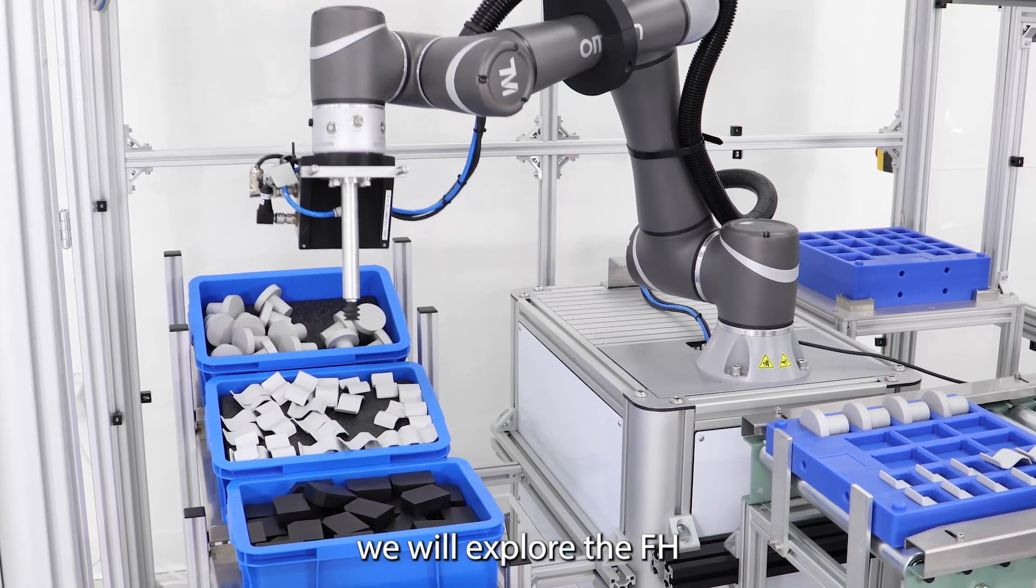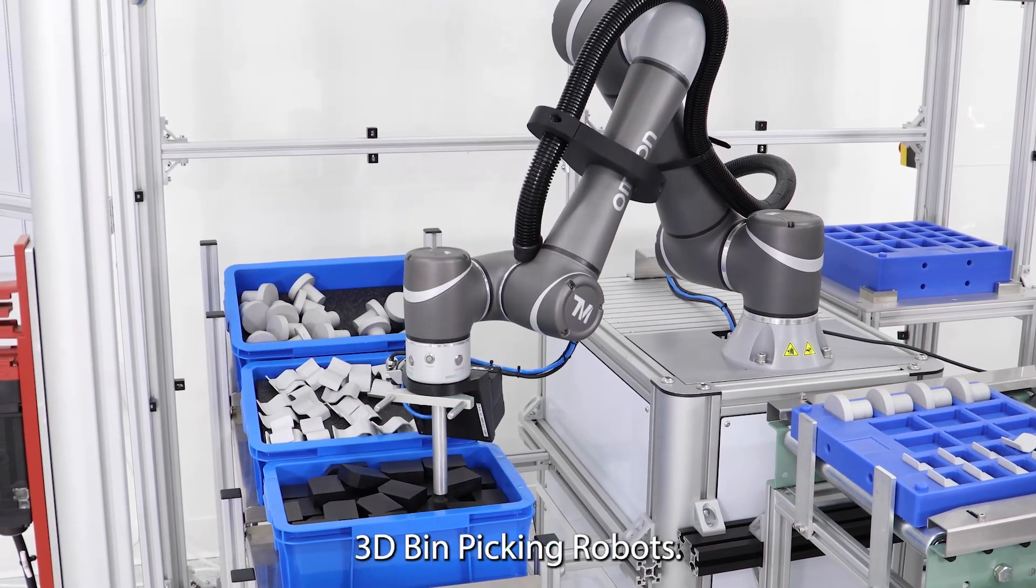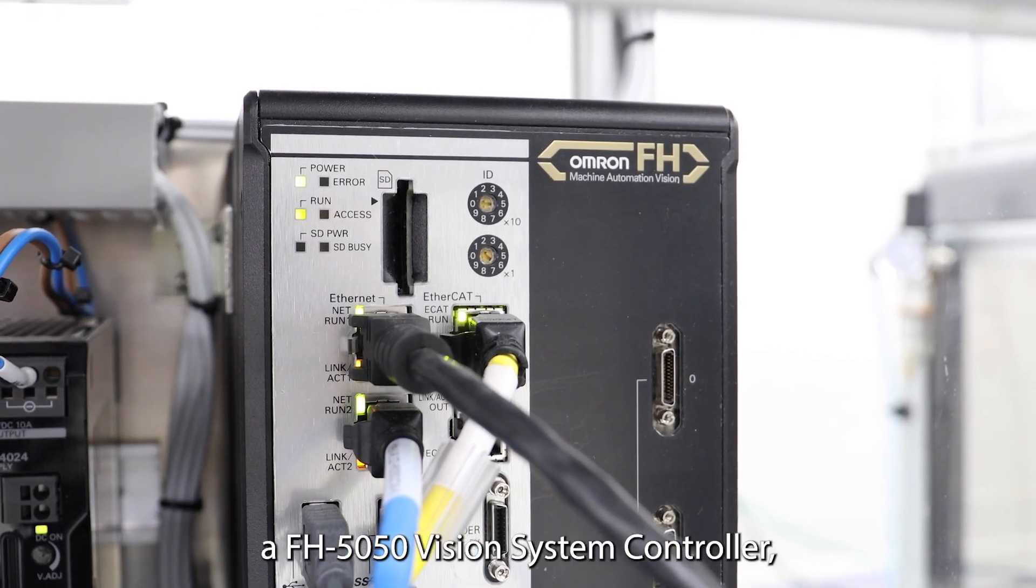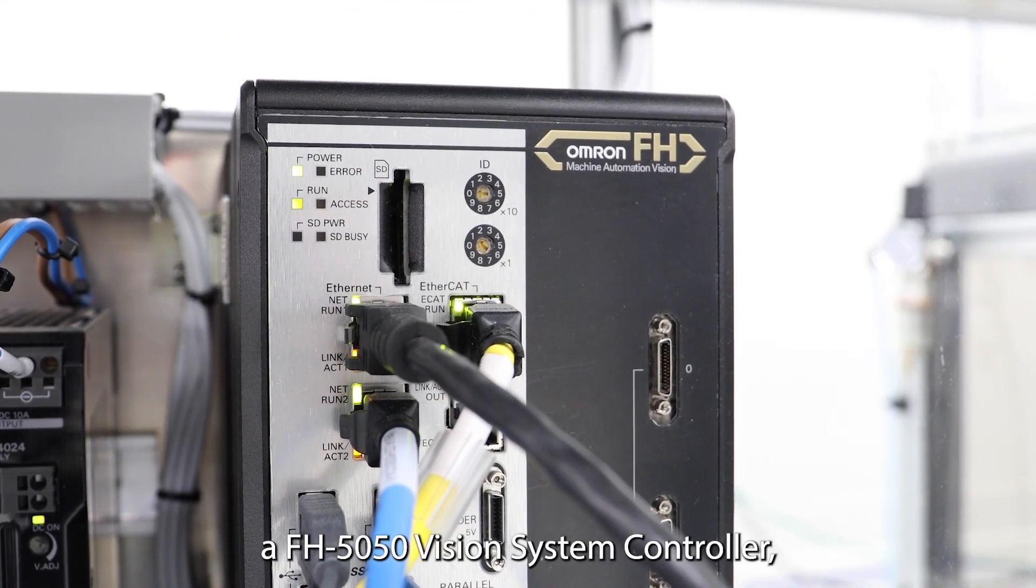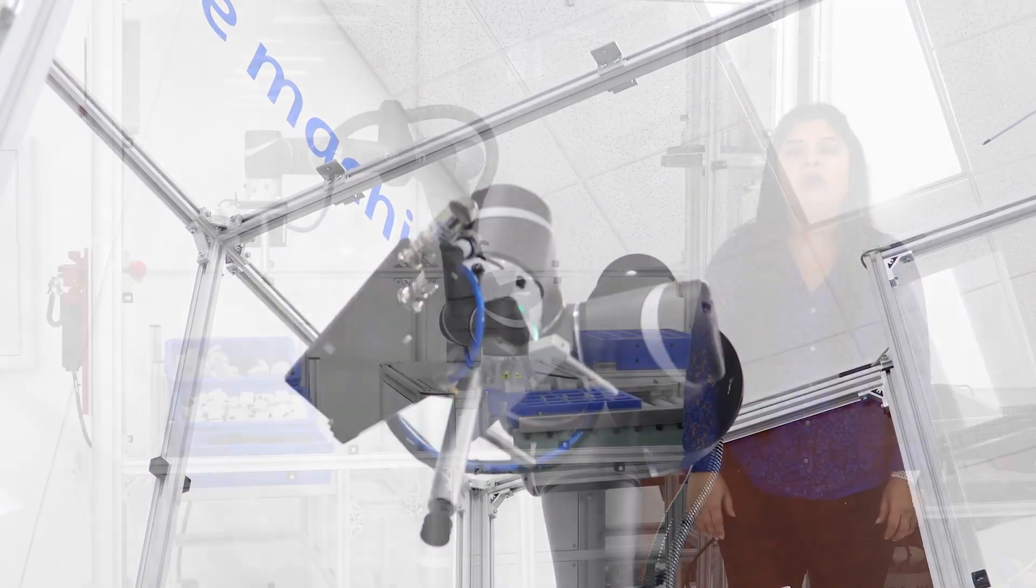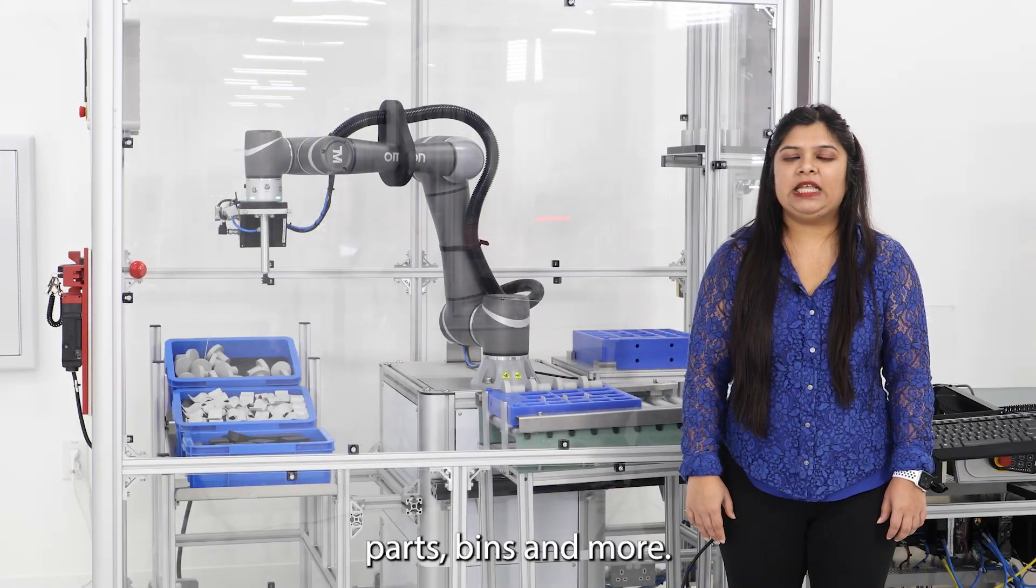Today we will explore the AFH3D bin picking robot set. It includes an Omron Techman cobot, AFH5050 vision system controller, AFH SMD series 3D camera, parts, bins, and more.